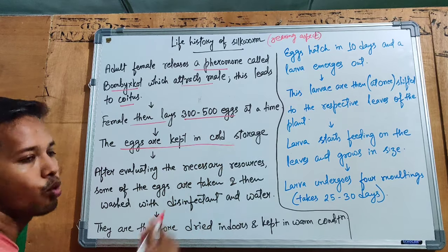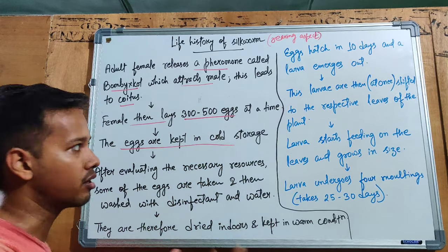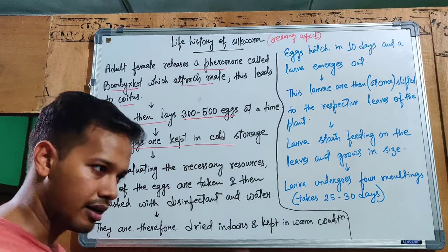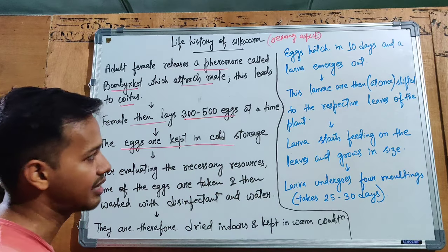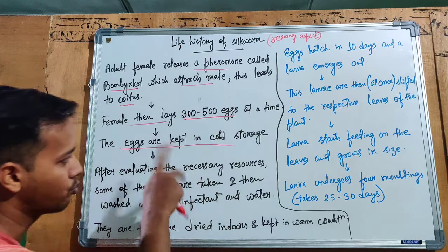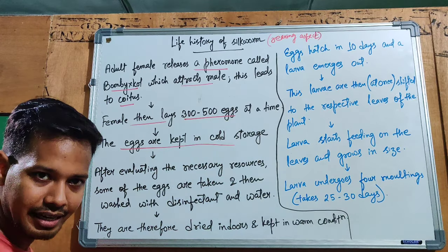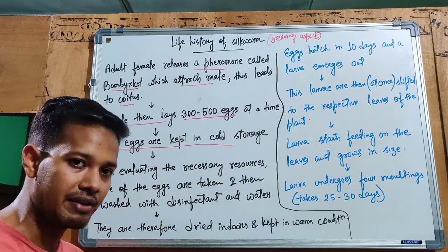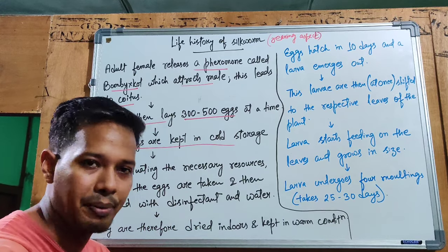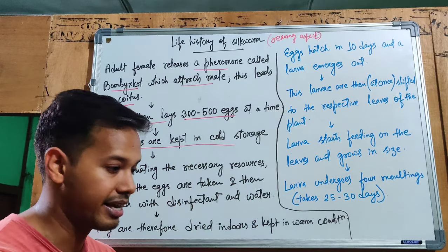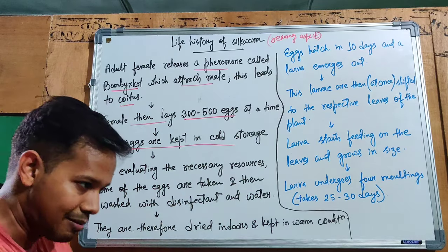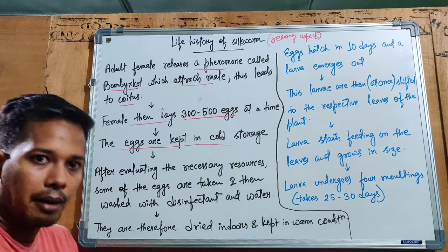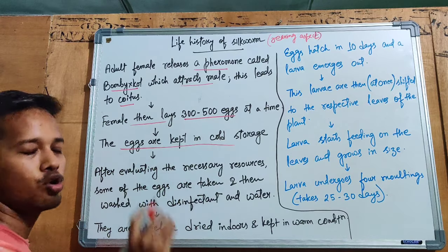The eggs are kept in cold storage. If rearing naturally in the wild, the female lays eggs on leaves. In controlled rearing, we collect the eggs on the white paper — since the eggs are very small, the white paper helps show them distinctly — and then keep them in cold storage.